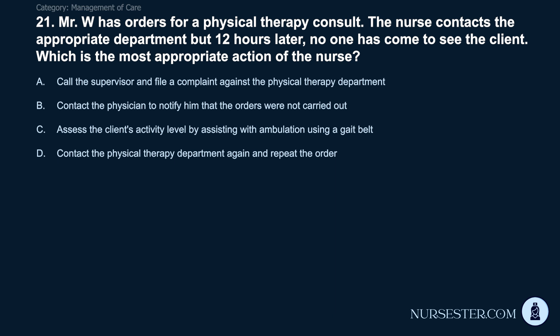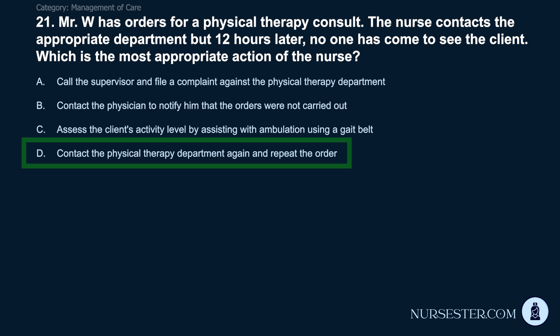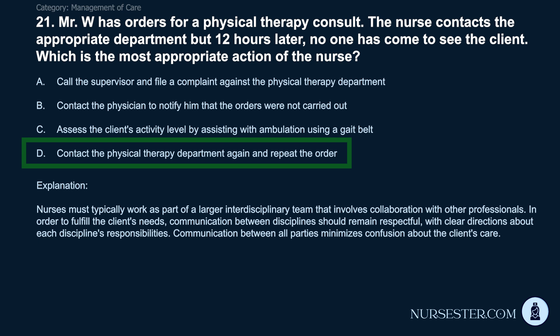Question 21: Mr. W has orders for a physical therapy consult. The nurse contacts the department but 12 hours later, no one has come. What is the most appropriate action? A) Call the supervisor and file a complaint. B) Contact the physician to notify him that orders were not carried out. C) Assess the client's activity level using a gait belt. D) Contact the physical therapy department again and repeat the order. Correct answer: D. Contact the physical therapy department again and repeat the order. Nurses must work as part of an interdisciplinary team with respectful communication. Communication between all parties minimizes confusion about the client's care.